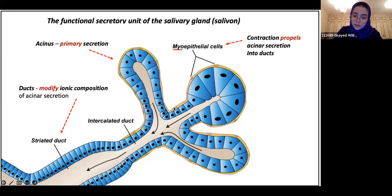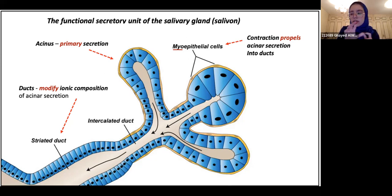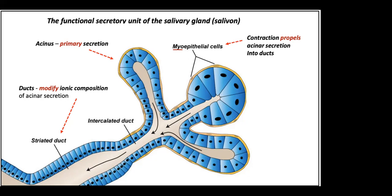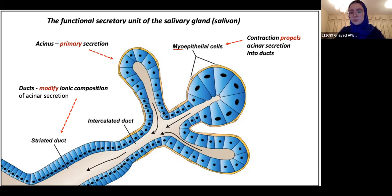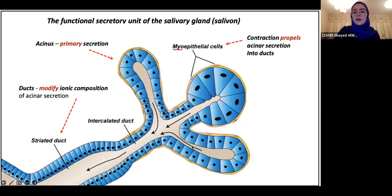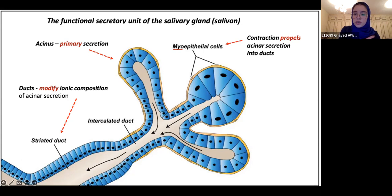We also have flat yellow cells around the acinus called myoepithelial cells. These cells contract in order to move the saliva into the duct — that's their entire purpose. To summarize: the acinus produces saliva, the duct modifies saliva, and the myoepithelial cells contract to push the saliva out.